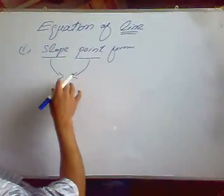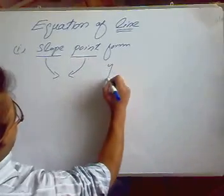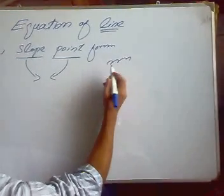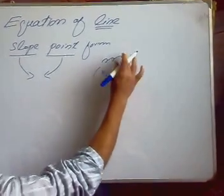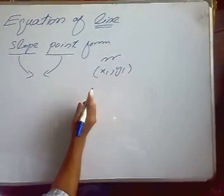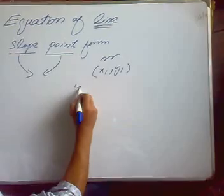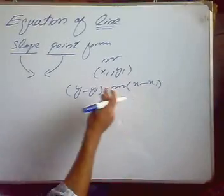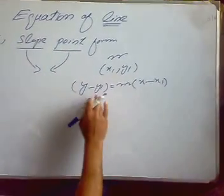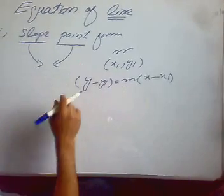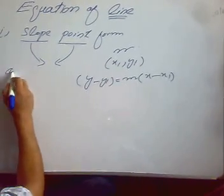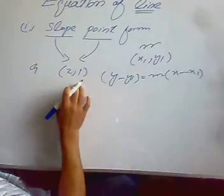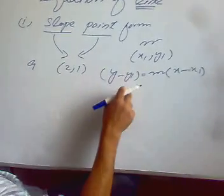Let me first write the general form of that equation. Suppose we are given a slope m and there is a point (x1, y1) which lies on that line. Then the general form of that line will be: y minus y1 equals slope times x minus x1. This is known as the slope-point form. Suppose the slope is 9 and the point which lies on the line is (2, 1). To find the equation of the line, we just put the values into this general form.